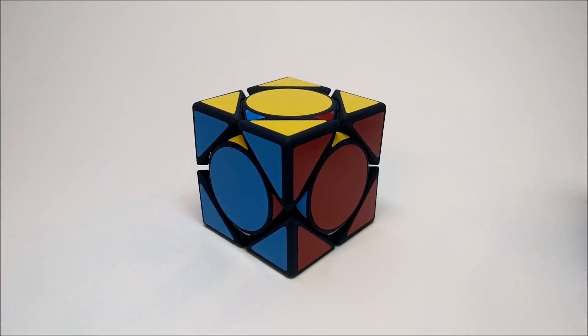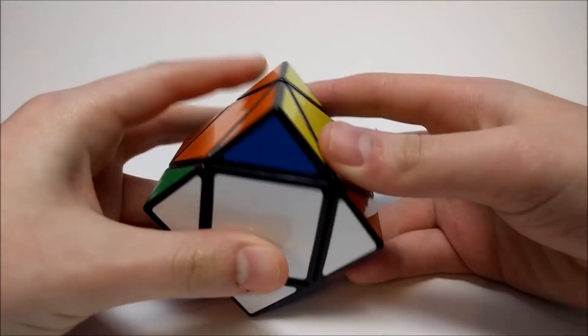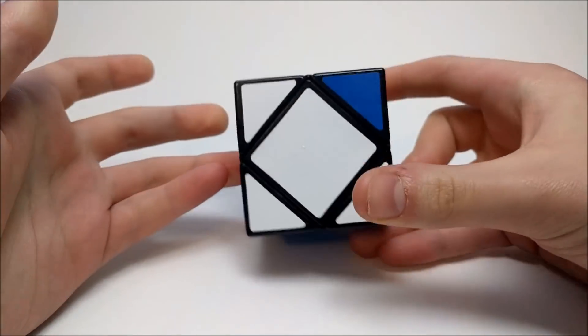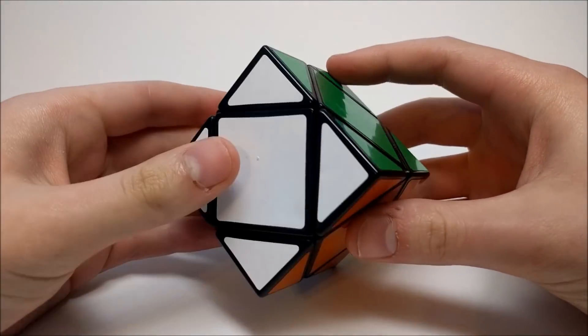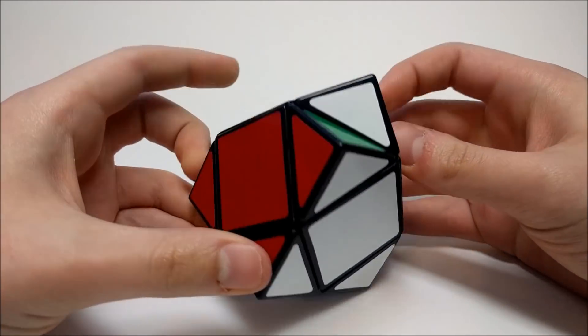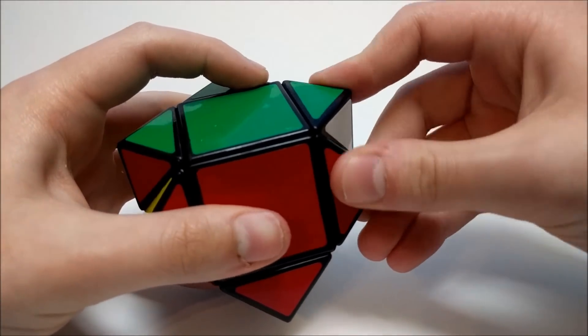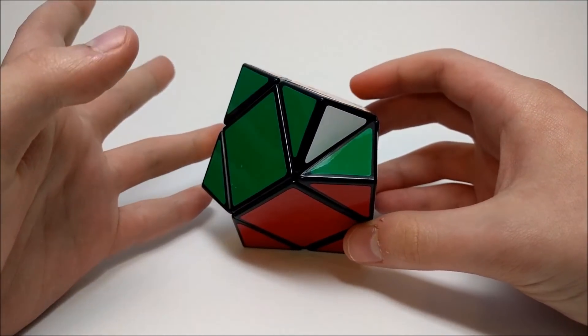But first, I'd like to ask a question. Have you ever picked up a Skewb and you're playing with it? I'm not a speed cuber, so I don't really know how to do the fancy moves, but I do have a Skewb. Have you ever played with a Skewb, turned a grip halfway, and then thought, wouldn't it be cool if I could exchange these two pieces? I know I have, and I know that a lot of people have.